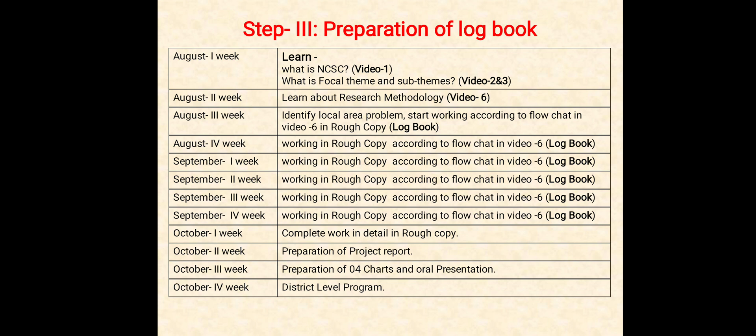In the third week of August, identify the local area problem and start working according to the flowchart explained in video six, in your logbook. In the next 30 days, complete the work in detail in the logbook. In the second week of October, prepare the project report. In the third week of October, prepare four charts and the oral presentation, and you will be ready for participation at the district level, if it is organized in the fourth week of October.